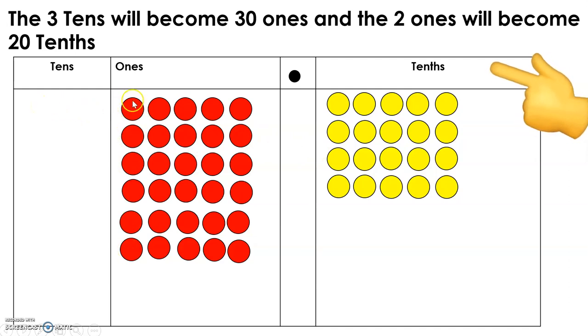Great. So this is the thing that we are discussing. We are talking about thirty ones because of the three tens coming from here, and now it has become thirty ones. And the two ones became twenty tenths, and it's here already. One, two, three, four, five, six, seven, eight, nine, ten.